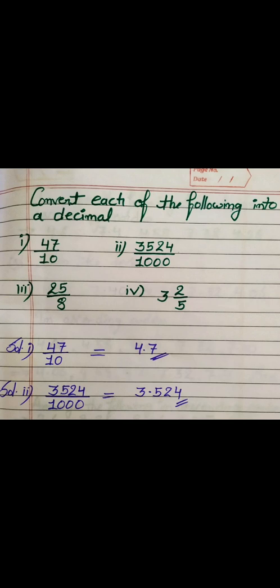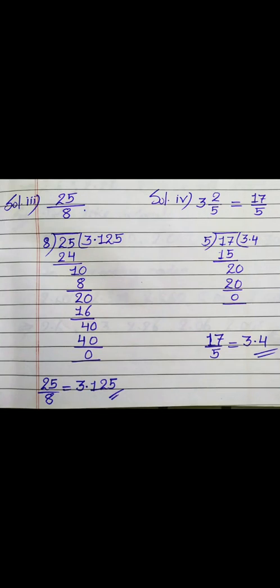For the third and fourth examples, the denominator value is not a multiple of 10, so we divide. For 25 upon 8, we divide 25 by 8: 3 times 8 is 24, remainder 1. We mark the decimal and add a zero to get 10, divide again: 8 goes 1 time giving 2, remainder 2. 2 becomes 20, 8 goes into 16, giving 2 with remainder 4. 4 becomes 40, 8 fives are 40. After simplification we get 3.125 in decimal form.